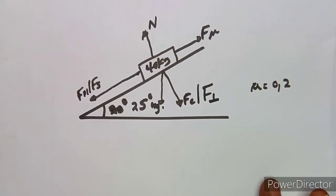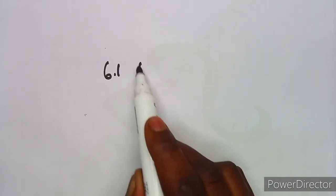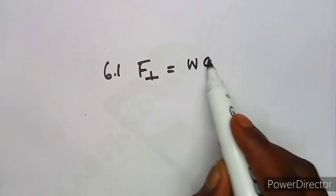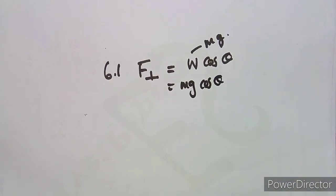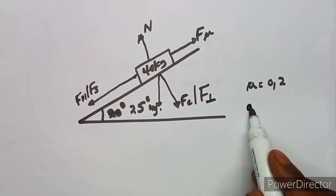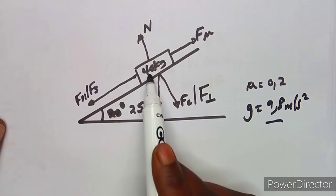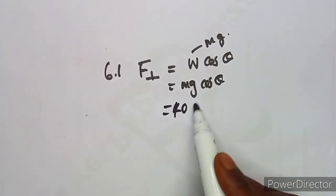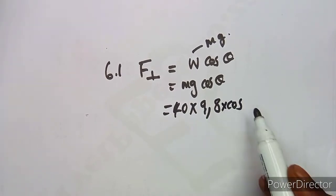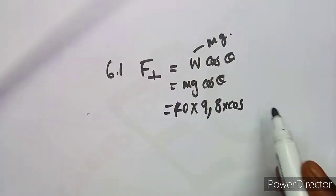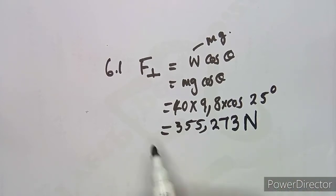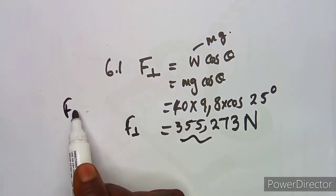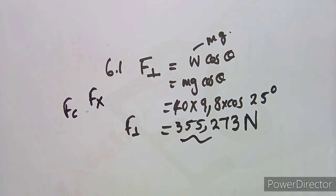Question 6.1: Calculate the weight component perpendicular to the incline. The perpendicular component formula is F-perp = W cos θ = mg cos θ. Substituting: 40 × 9.8 × cos 25°, which gives approximately 355.273 N. This is your perpendicular component, also written as Fc.